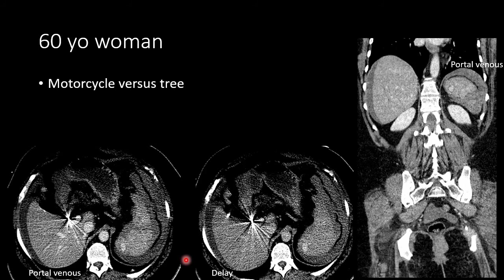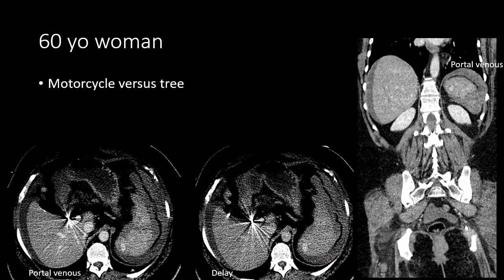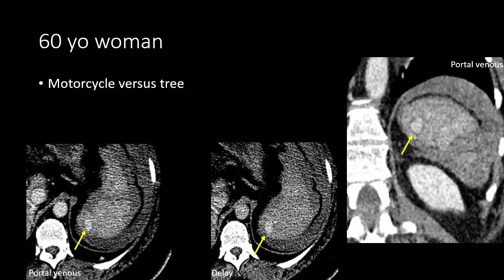Here we have another example of splenic injury — a woman who was riding a motorcycle. We see a laceration through the spleen and a splenic hematoma, but in addition a focus of high density in the spleen consistent with a vascular injury. We want to classify that as either a pseudoaneurysm or active extravasation. On the portal venous phase, the vascular injury closely parallels the aorta in density. On the delayed phase, there is density very similar to the aorta. On the portal venous phase, we see a well-defined area, and on the delayed phase, notice that this area does not change shape.